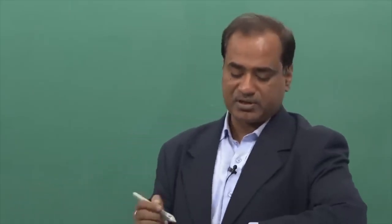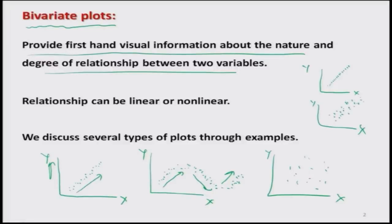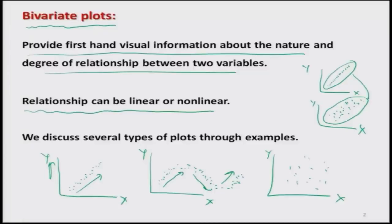These bivariate plots provide first-hand visual information about the nature and degree of relationship between two variables. For example, on the same scale, one dataset may show points very close to a line — indicating a higher degree of linear relationship — while another shows more scatter, indicating a lower degree. These relationships can be linear or non-linear.